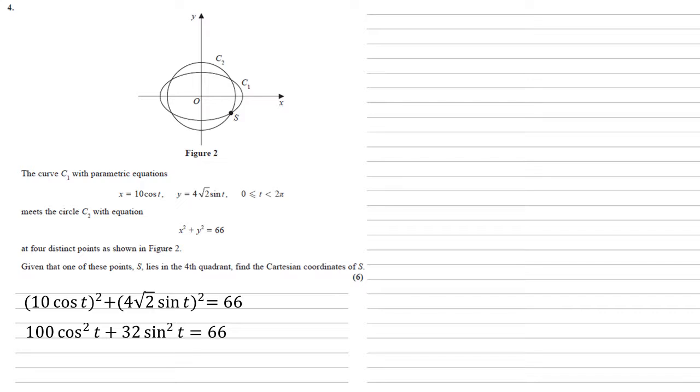Now we need to try and solve this to find t, which is a bit tricky when we've got both cos squared and sin squared in there, but remembering our identities, we know that cos squared plus sin squared equals 1.